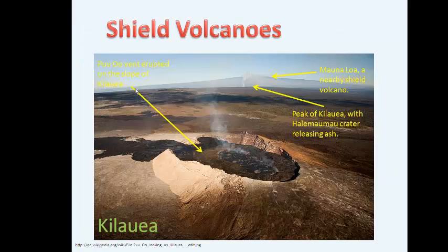Another type of volcano is a shield volcano. If you've traveled to Hawaii, you've seen shield volcanoes — these are the largest volcanoes. They form over hot spots, and they're formed by thinner magma. Because it's thinner magma, it traps less gas, so the eruptions are less explosive. As a result, that causes this gentle sloping, shield-like structure of these volcanoes.